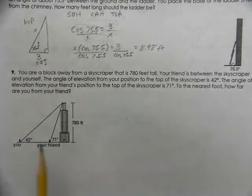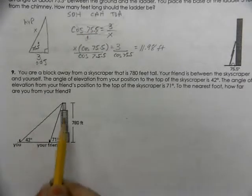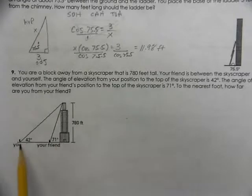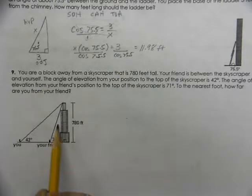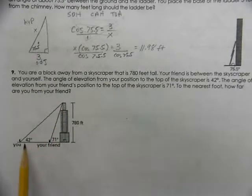For the last question, we're working with a skyscraper. Here, big tall building, you're standing here, 42 degrees to the top of the building, the building 780 feet tall. Your friend is standing closer to the building, when they look up, they're looking at a 71 degree angle. So, the question is, how far are we here?